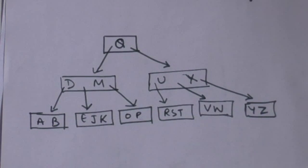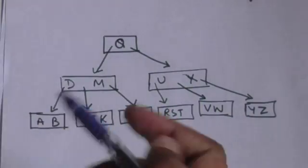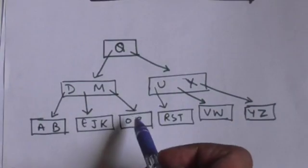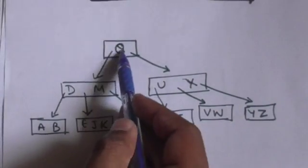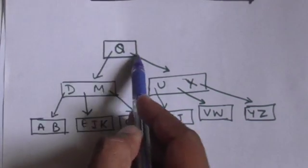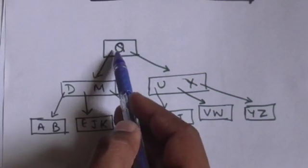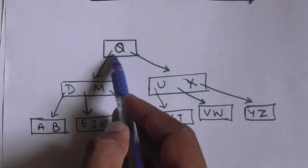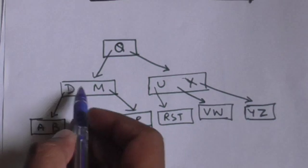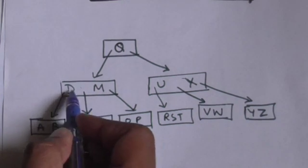Suppose this B-tree is given to us and we have to search the key P. First of all, we will start from the root node. The root node has only one key, that is Q. Now P is smaller than Q, so we will move to the child node which is at the left of key Q.